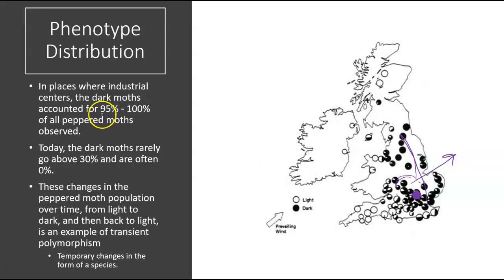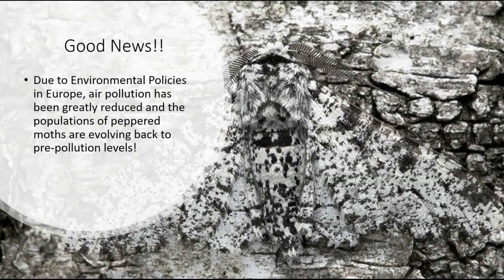In areas where 95 to 100% of the moths were dark, populations have decreased to around 30% maximum, and in many places where black moths were originally found, the proportion has dropped all the way back to zero. This is good news for air quality and for the moth itself. Due to environmental policies in Europe, air pollution has been greatly reduced and populations of peppered moths are evolving back to pre-pollution levels.